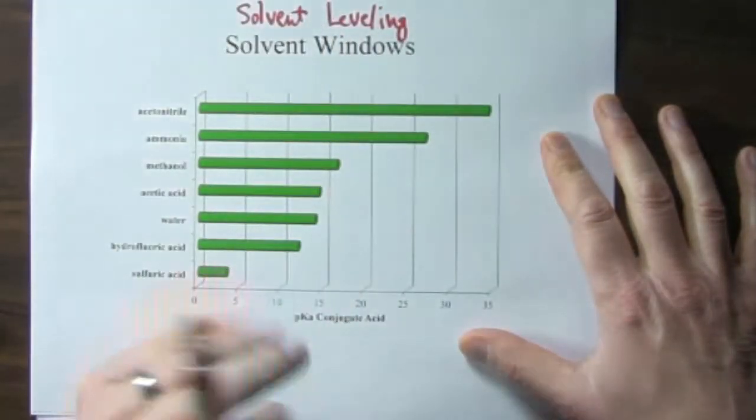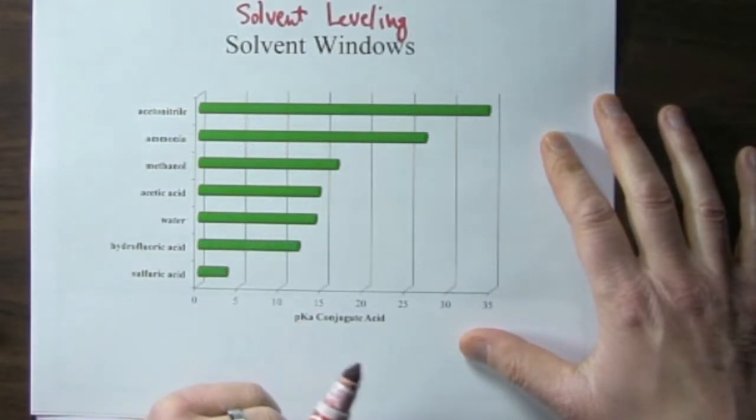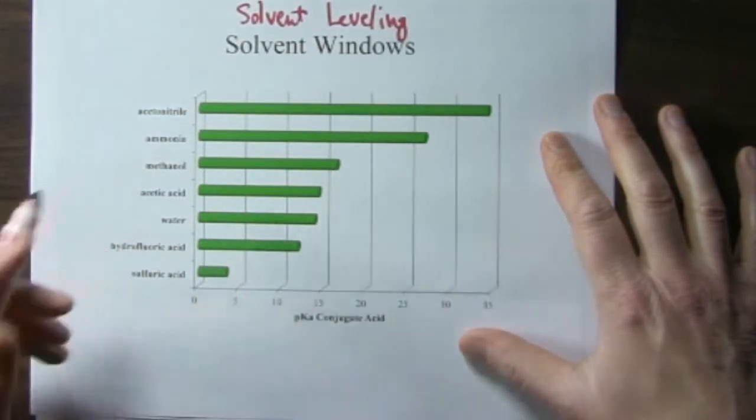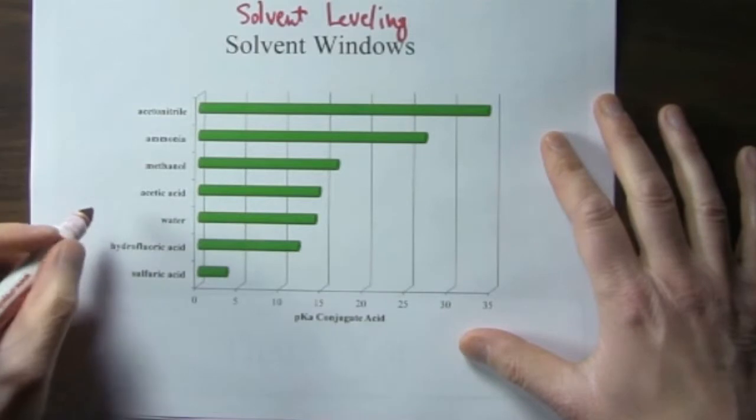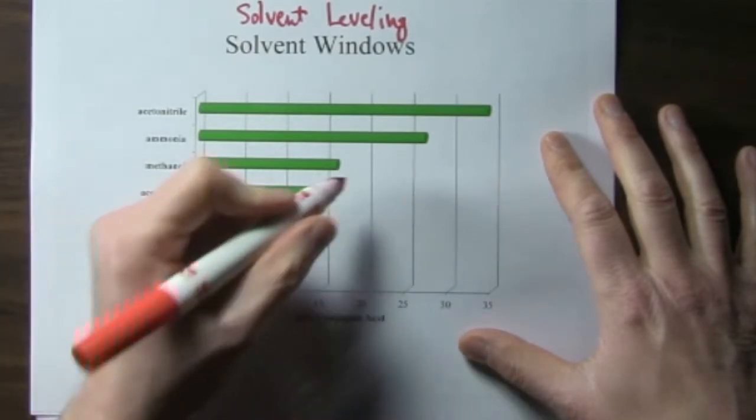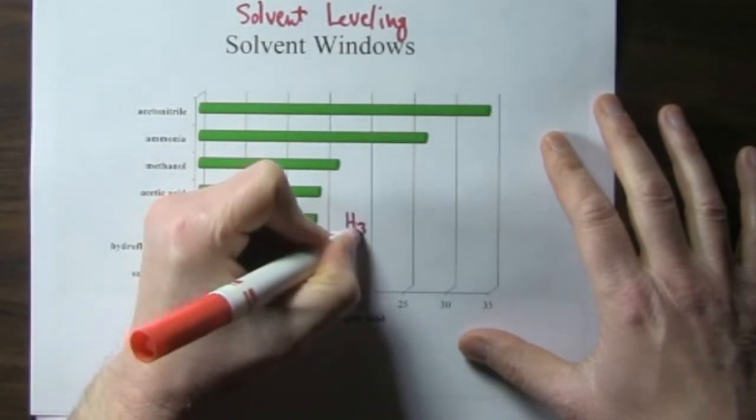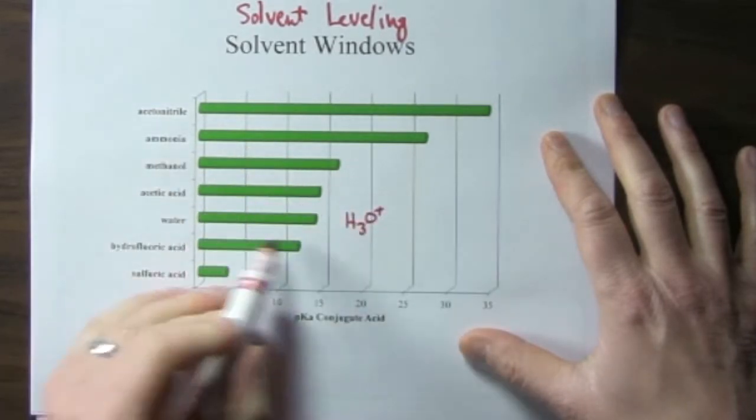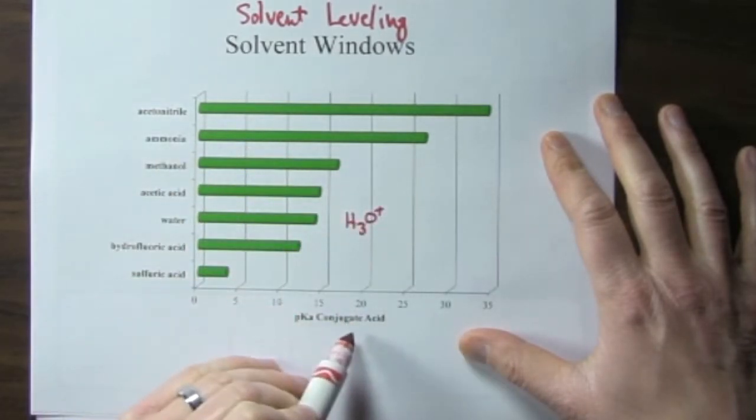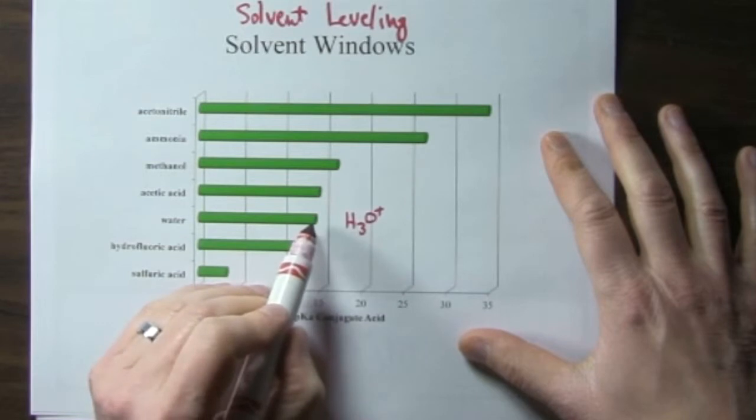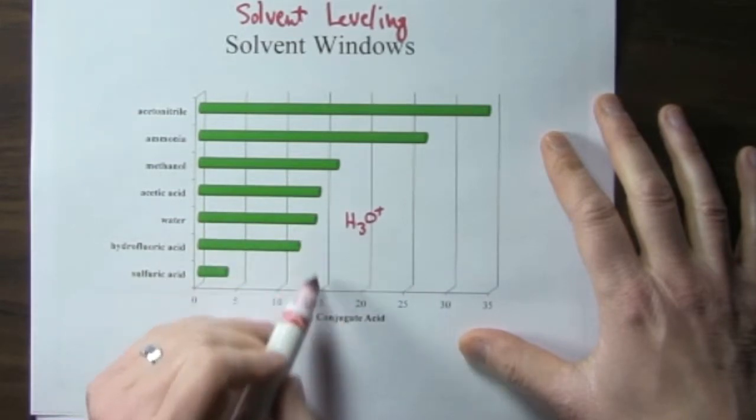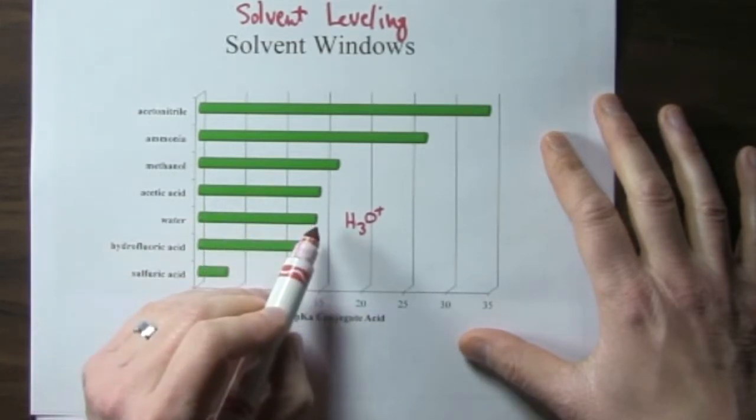So just as we saw, hydroxide would be the strongest base that can exist in water. Then hydronium is the strongest acid that can exist in water. So this is the pKa for the hydronium ion is 14. So that's why we have the 0 to 14 scale for water.